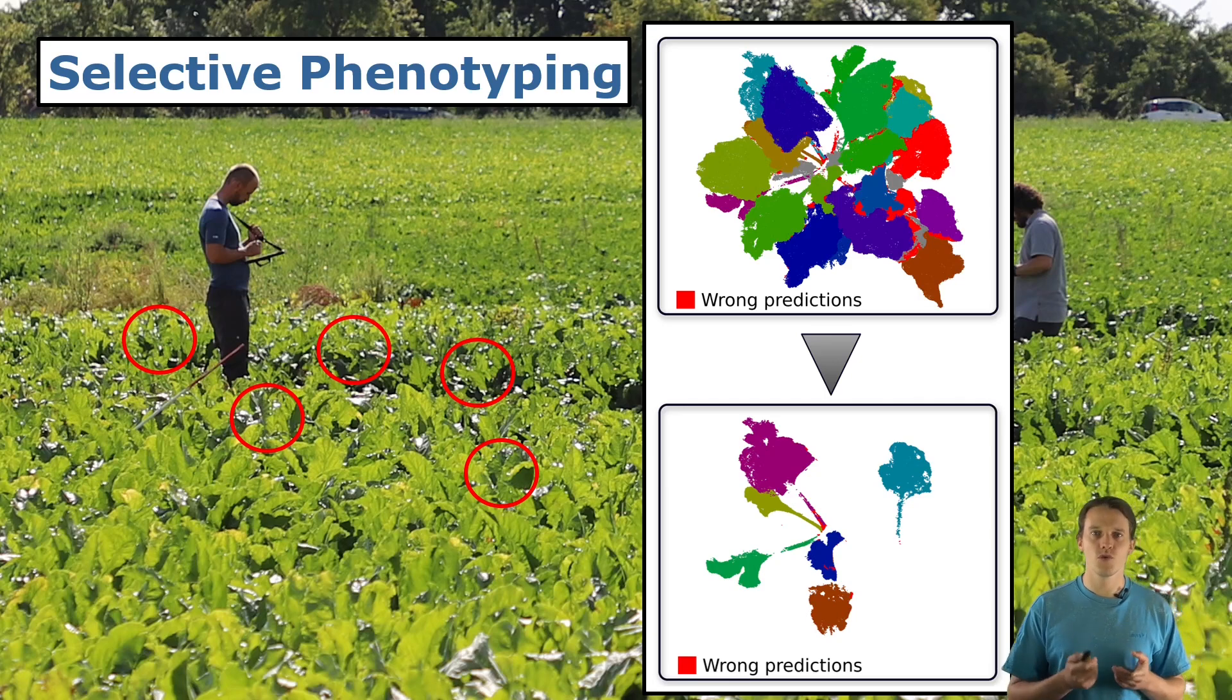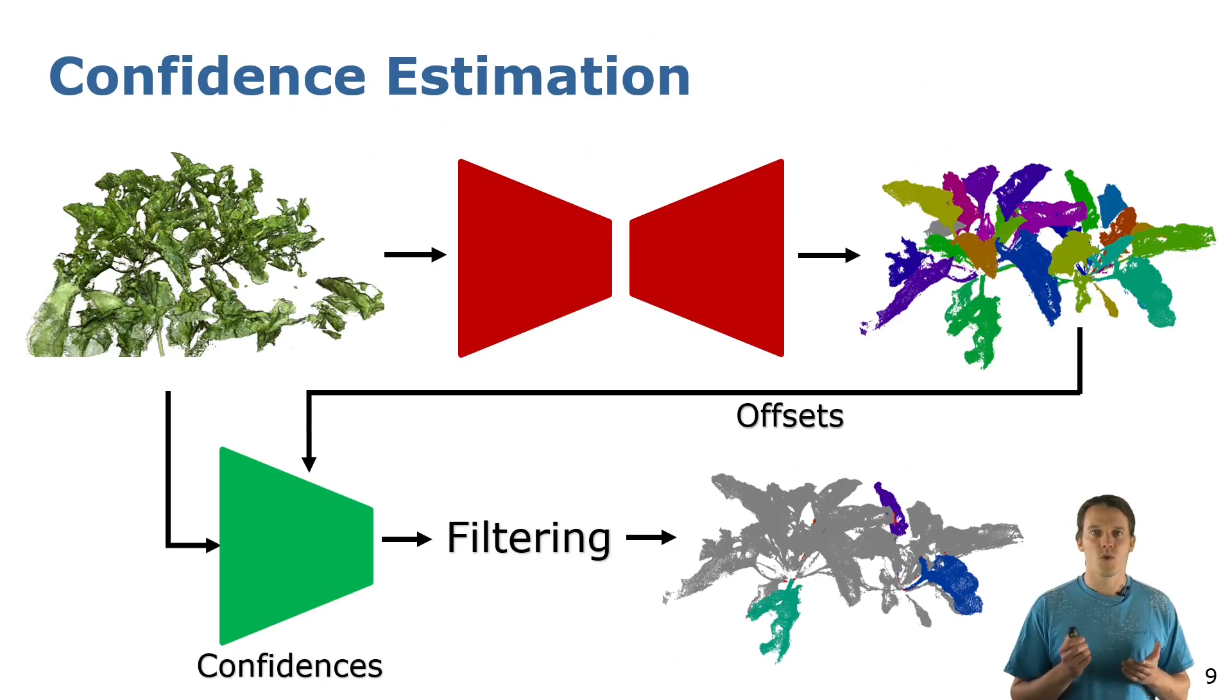We can of course not use the ground truth labels to detect the quality of our predictions. That's why we added another encoder, shown here in green, that takes as input the original point cloud and the predicted instances and outputs a confidence score for each leaf instance.